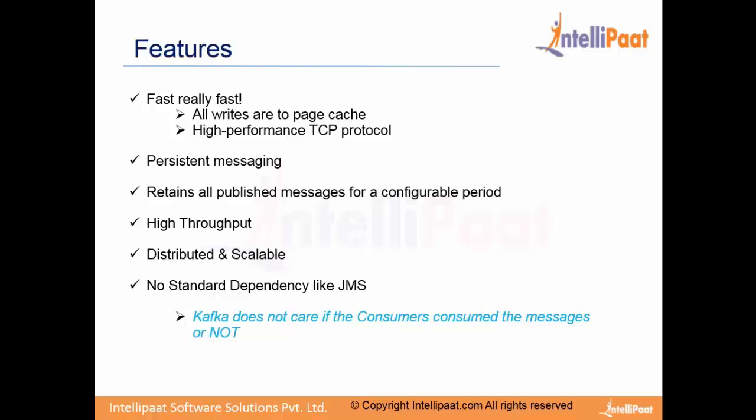Another feature of Kafka is persistent messaging. Since data is written to disk sequentially, we will not lose data in any case. Kafka retains all published messages for a configurable period — for example, you can configure it to store data for 7 days, after which Kafka is allowed to delete it. High throughput is achieved due to the page cache mechanism. Kafka is also distributed and scalable for petabytes of data — you don't need to worry about data size or follow strict dependencies like in JMS. Kafka doesn't care if the consumer consumes the message or not; it simply publishes and the consumer can consume at any time.